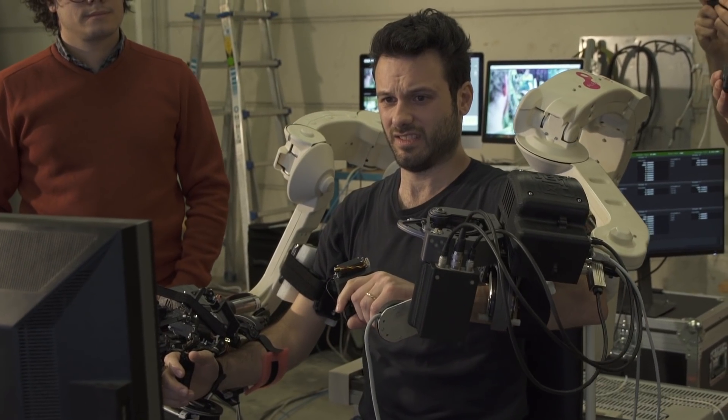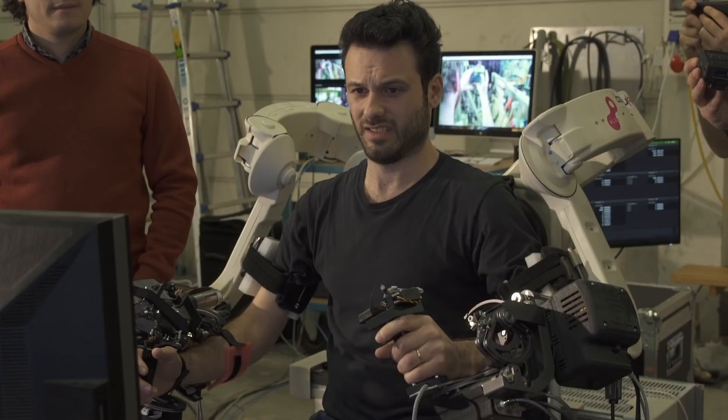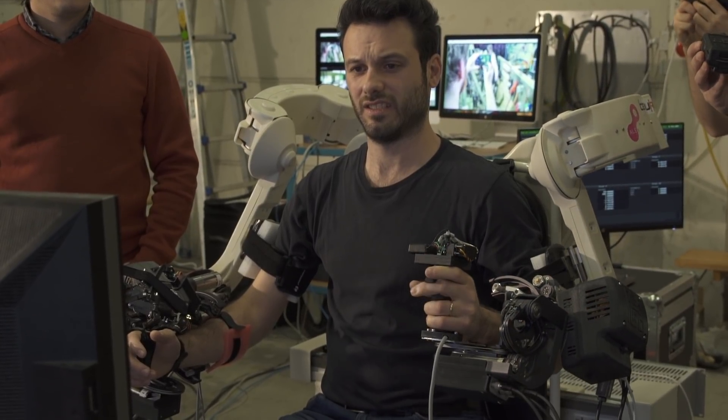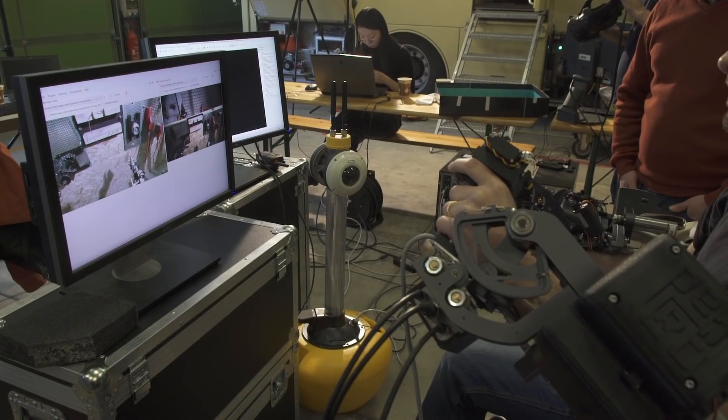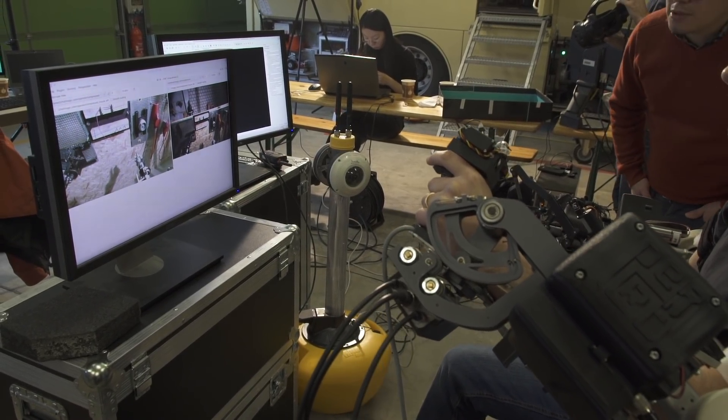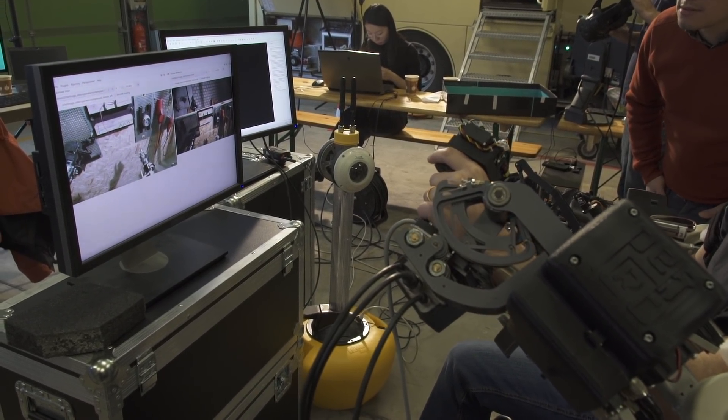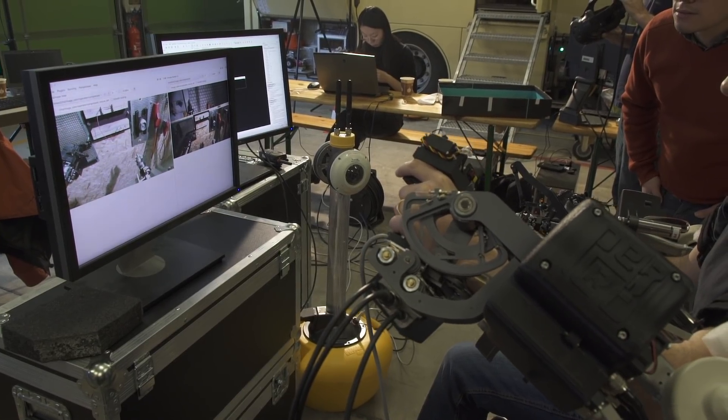Our team is leading the operator interface work package. We built an exoskeleton that is an advanced human robot interface in order to remotely control the Centaur robot. This means that the operator can remotely feel in terms of vision, in terms of touch, and can have a physical interaction like being remotely at the place of the robot.